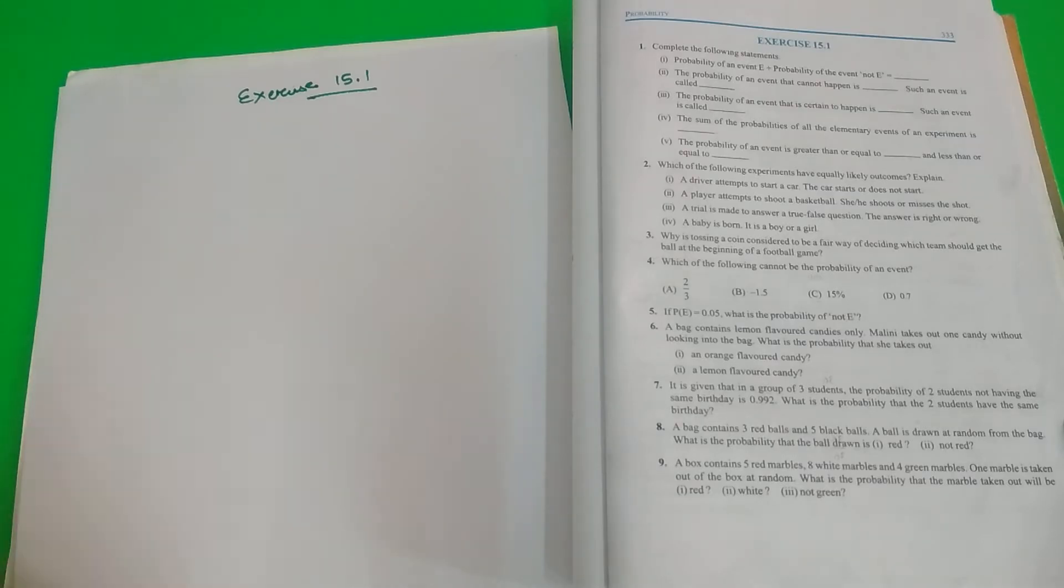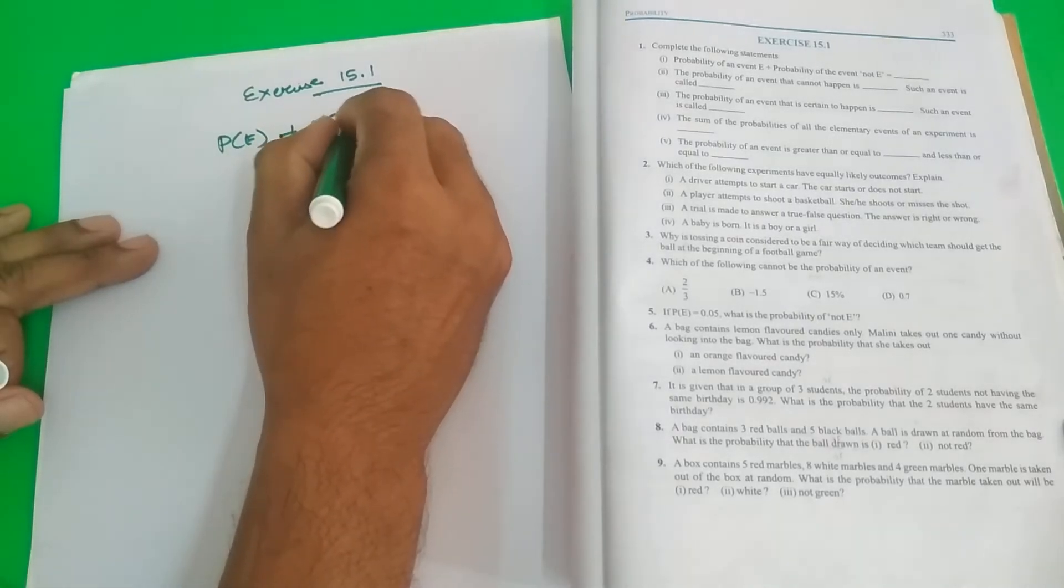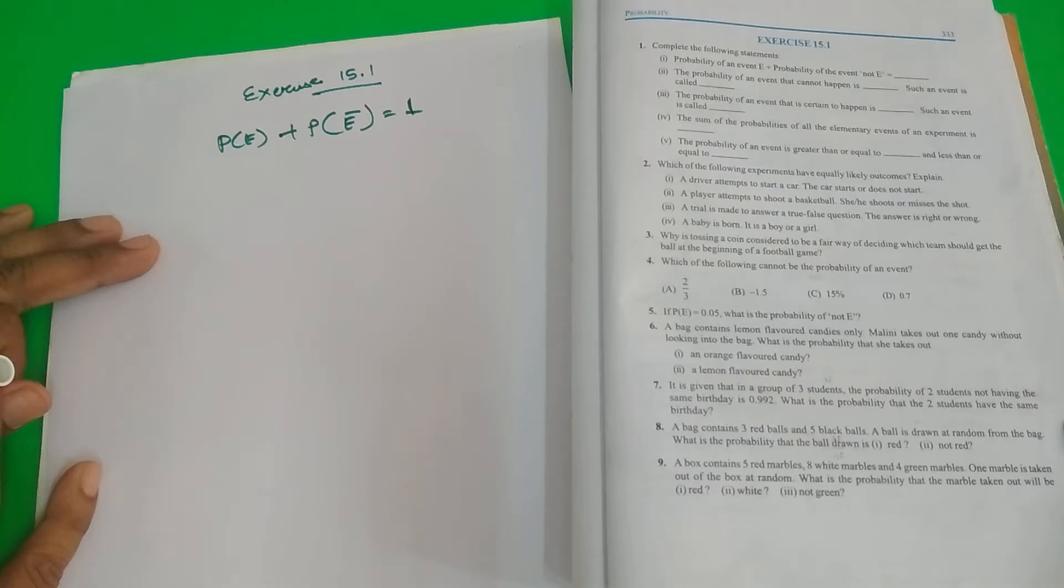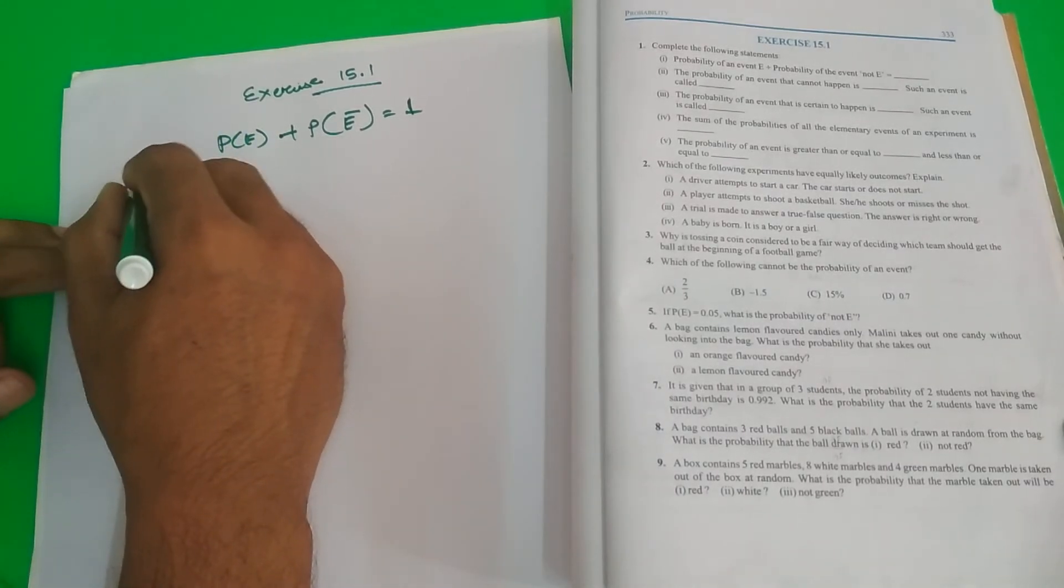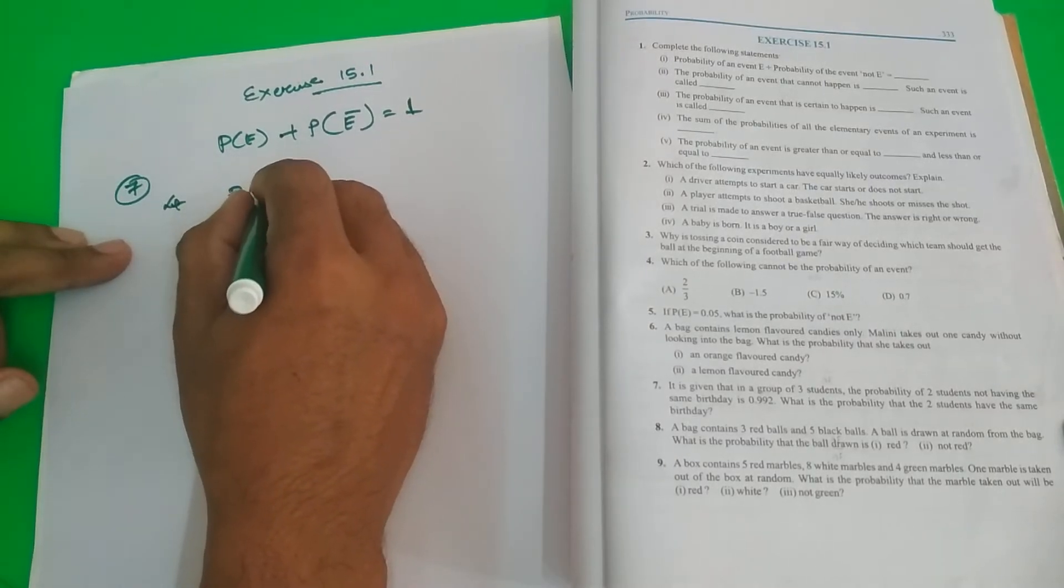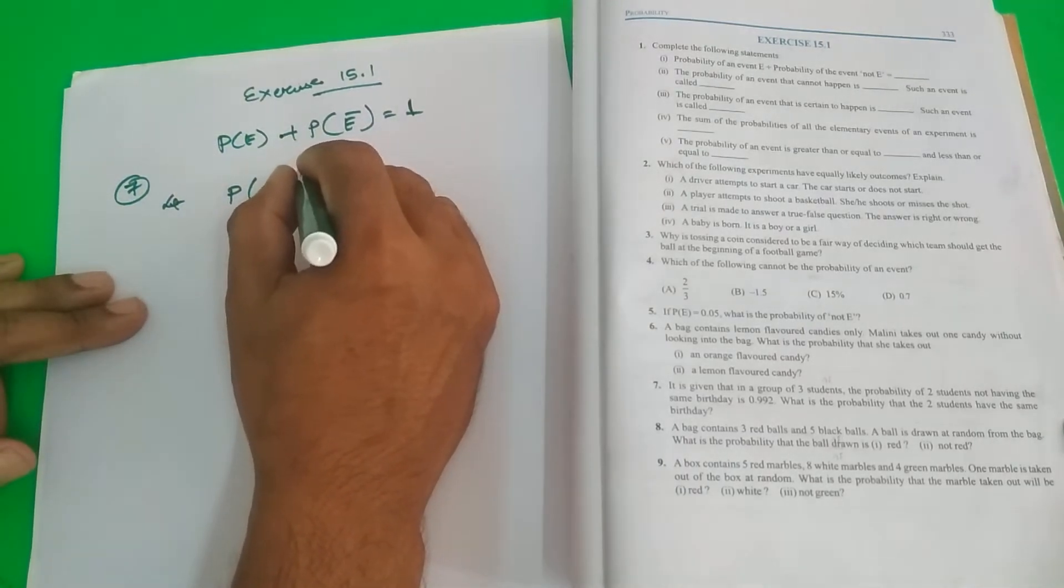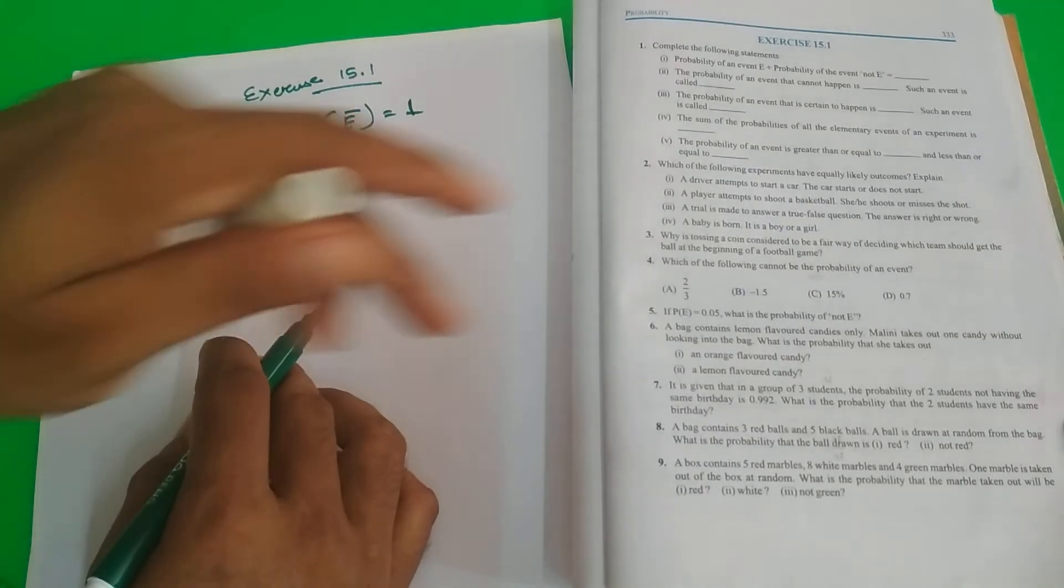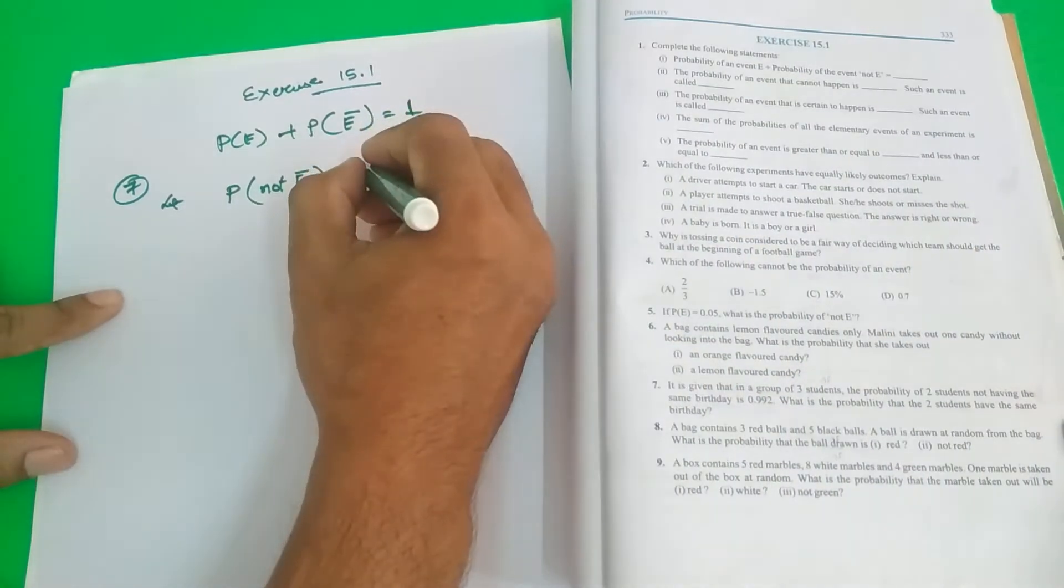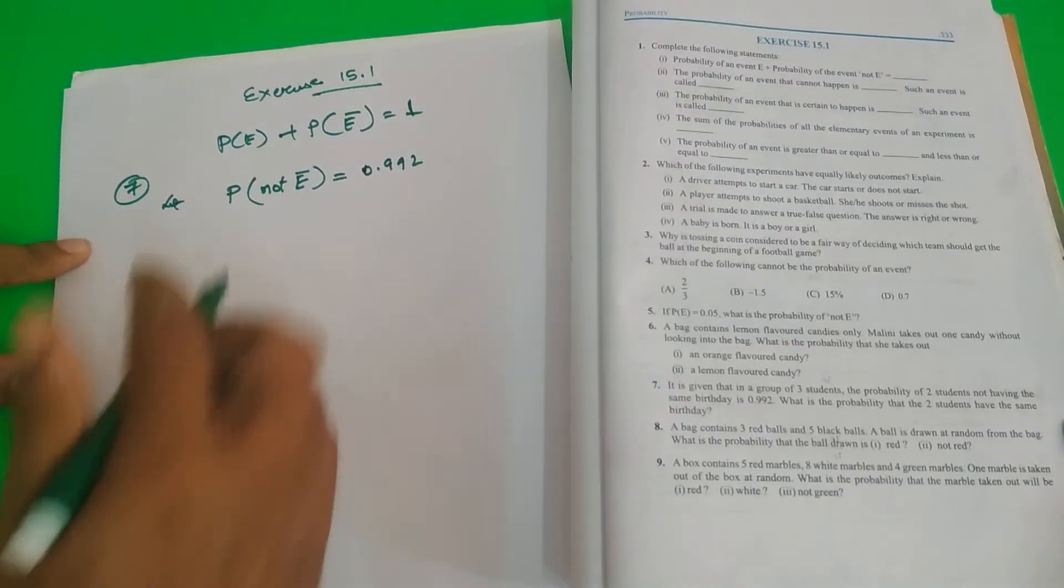One thing we have learned: Probability of an event plus probability of not an event equal to 1. This we already know. Therefore, I am considering this is question number 7. Let probability of not, let the event for the birthday be E. Not the event is what is given. The probability of 2 students not having the same birthday is 0.992. Clear?